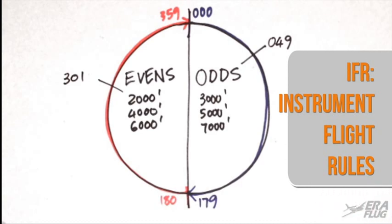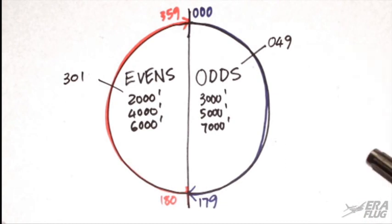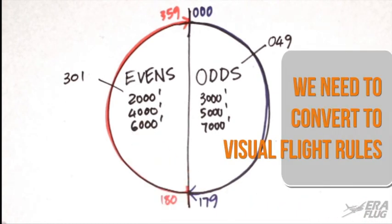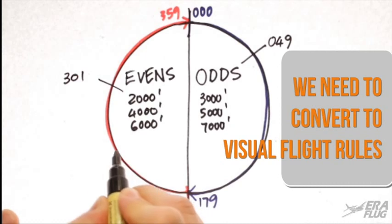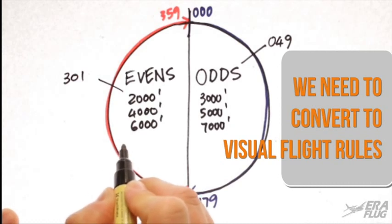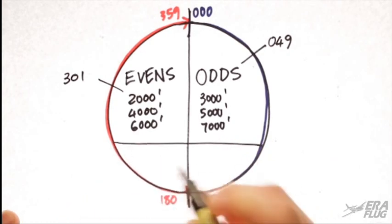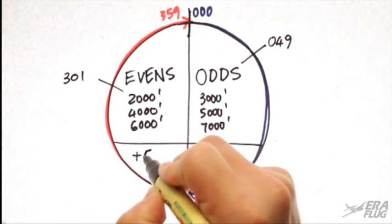When you begin flying, you normally fly under Visual Flight Rules, and so we need to convert our semicircular from IFR to VFR. And we do this by adding 500 feet to each sector.